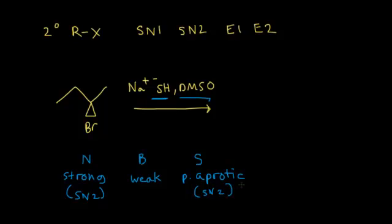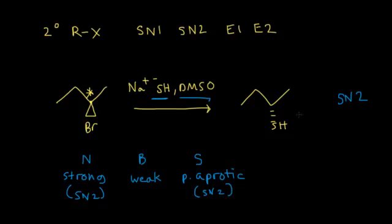We have two clues telling us this is an SN2 reaction. We have a chirality center, so we must consider the mechanism: the hydrogen sulfide anion attacks the carbon from the opposite side of the bromine. The bromine leaves, an SH group is added, and we get inversion of configuration.